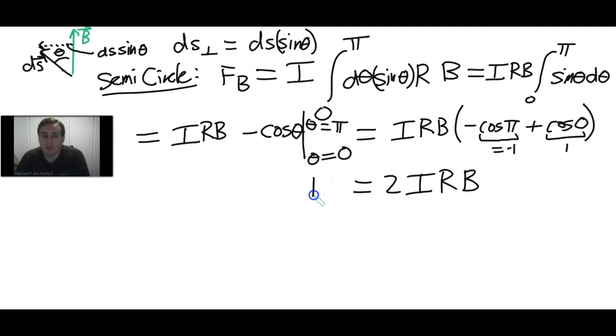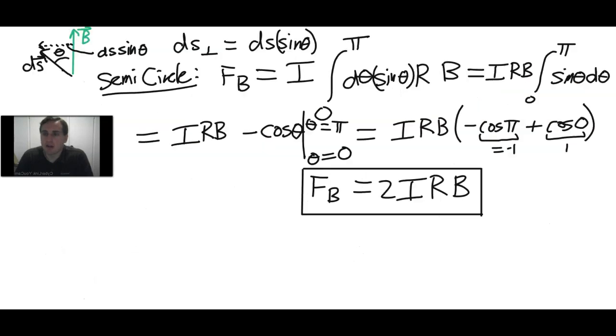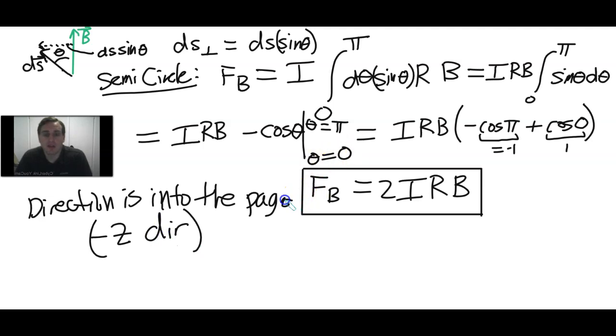That should be our answer for the magnetic force magnitude on the curved piece of wire. This is the magnitude. What about the direction? The DS and thus the current is always moving counterclockwise. Right here at the top, it's easiest to think about the direction. DS and I are in this direction, and the magnetic field is up. So it should be exactly into the page. The direction is into the page in the negative z direction.